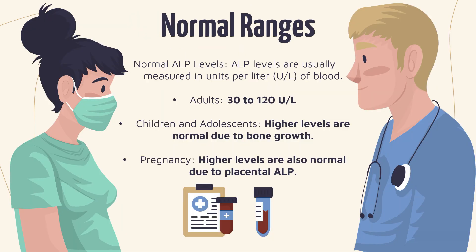So what are the normal ranges of ALP in the blood? Normal ALP levels are measured in units per litre of blood, and in adults usually range from 30 to 120 units per litre. In children and adolescents, high levels are usually normal due to active bone growth, and in cases of pregnancy, higher levels can also be normal due to the placental production of ALP.